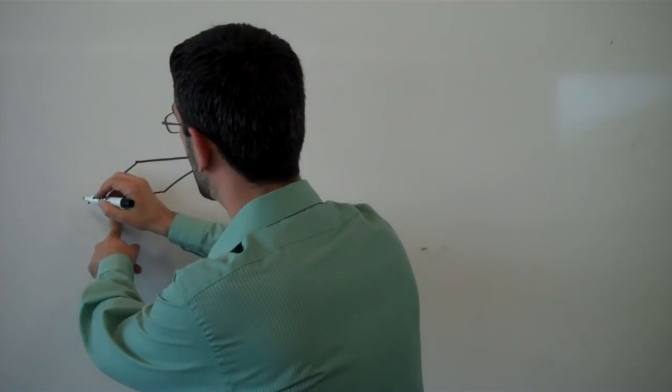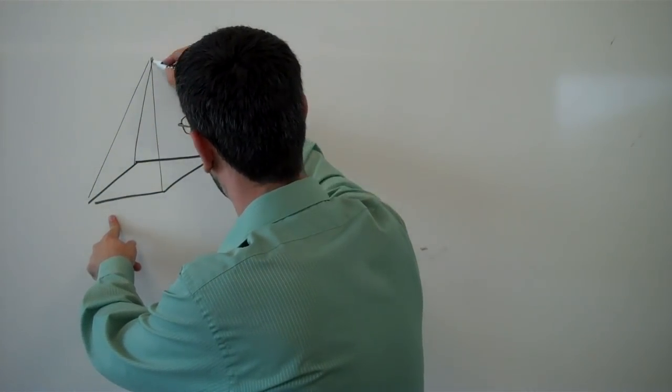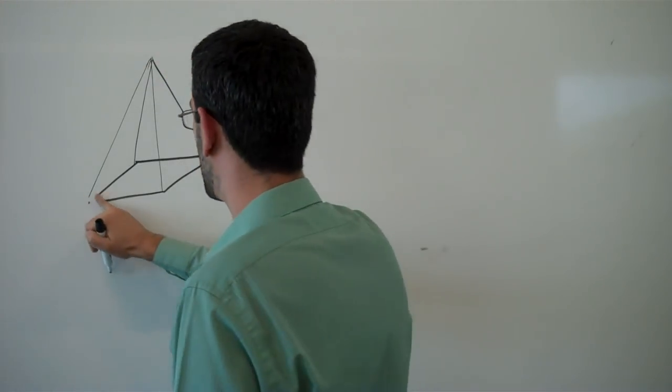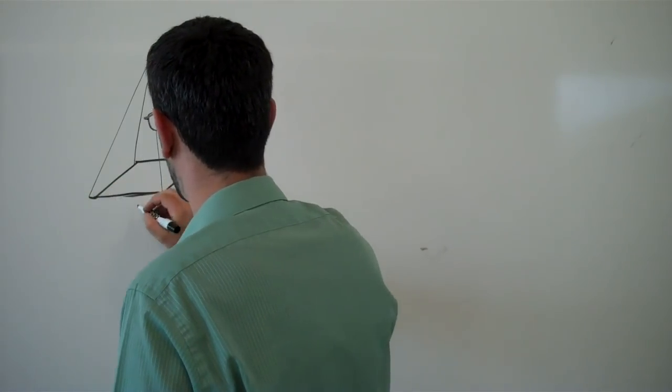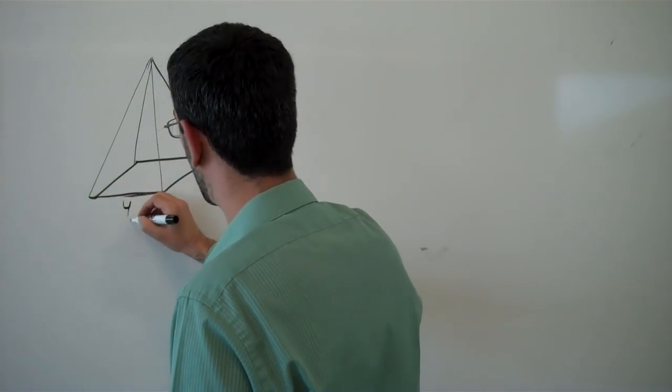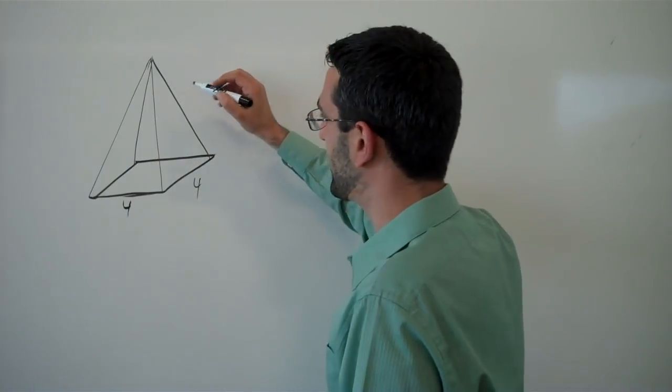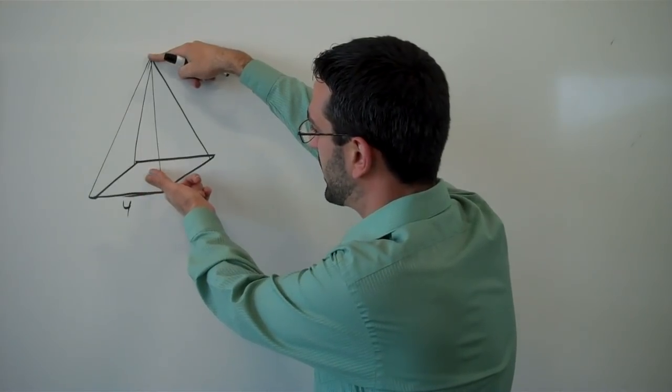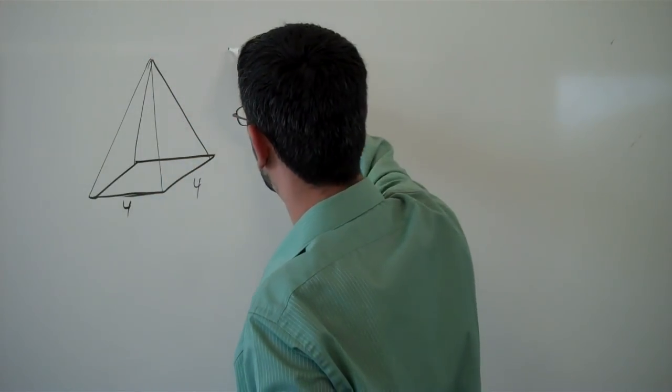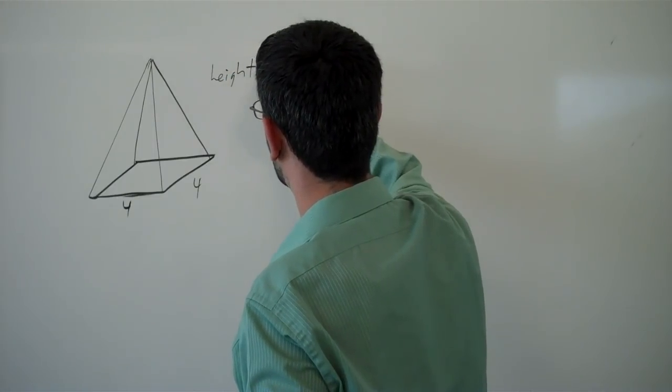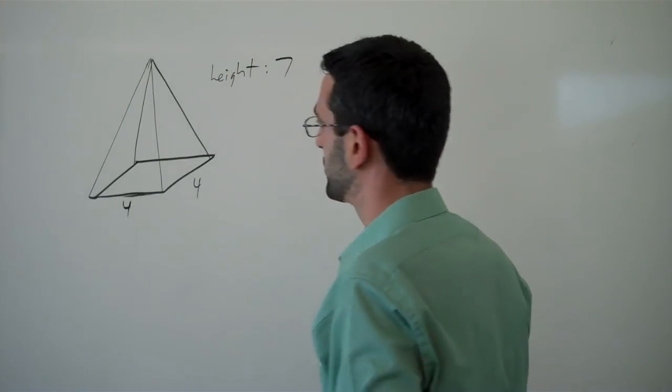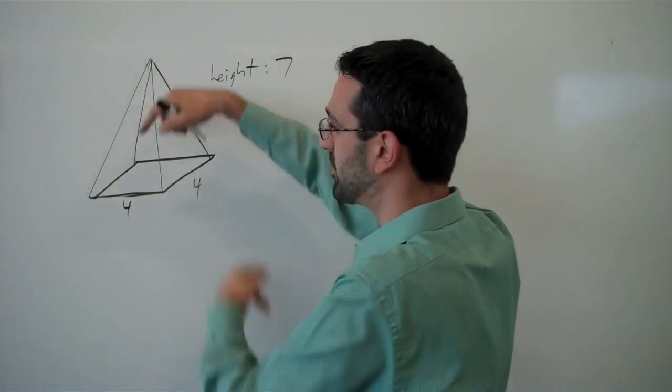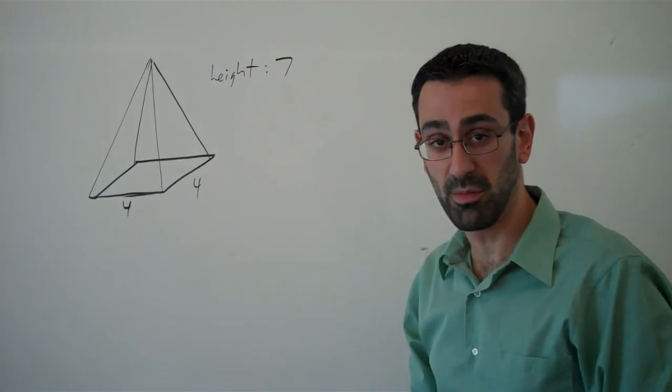So this is a base and we're imagining that we have a pyramid on top of that base. Okay, so these two sides have the same length, maybe each of these sides is length four. And then the height of this, the height of the pyramid, let's say the height is seven. Okay, so we got four here, four here, height is seven units. We want to find the volume of this shape.